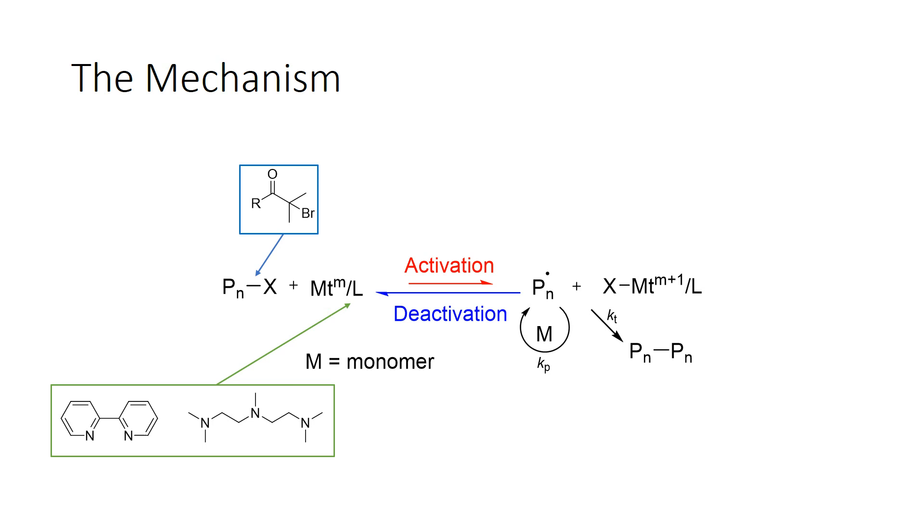Here we have, as I said, the metal is also copper. It can also be iron. Then we have some ligands. Normally nitrogen containing ligands, for example, like this bipyridyl or this PMDTA ligand here which coordinates into the metal that makes this the actual catalyst.